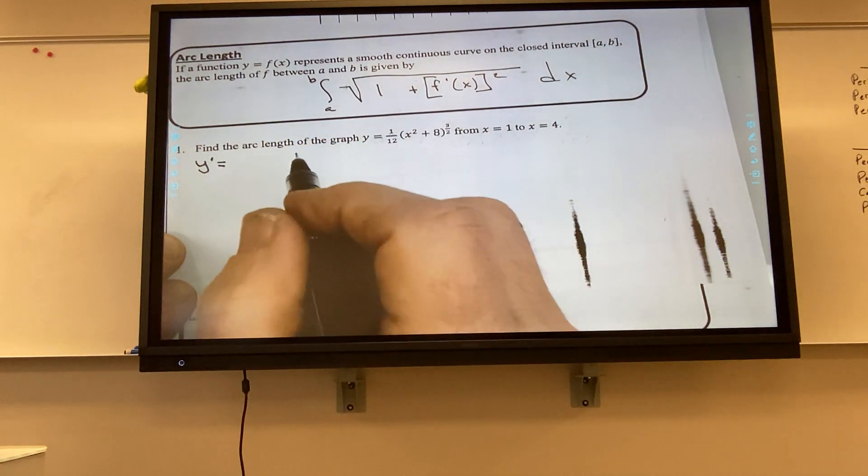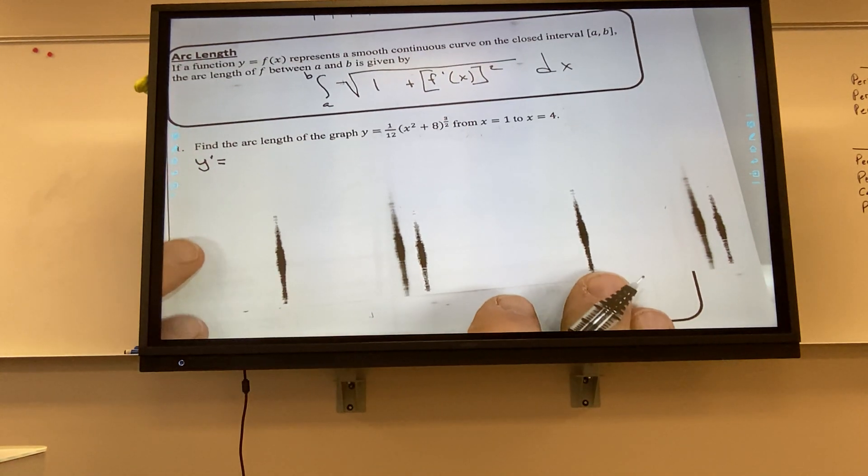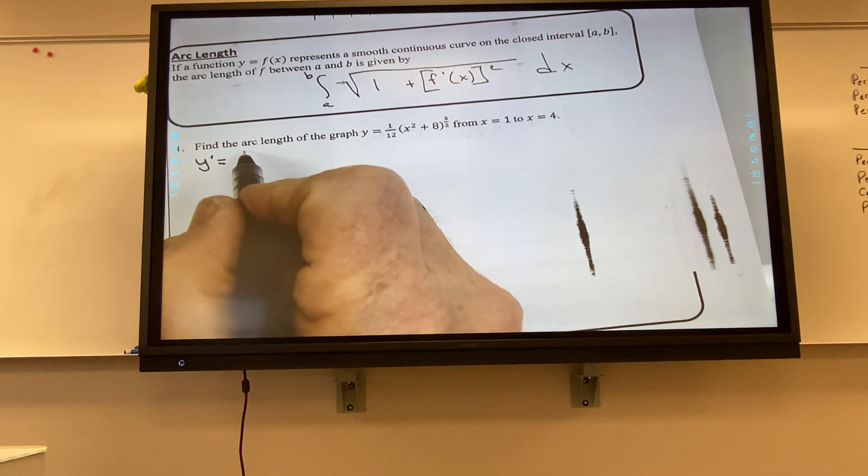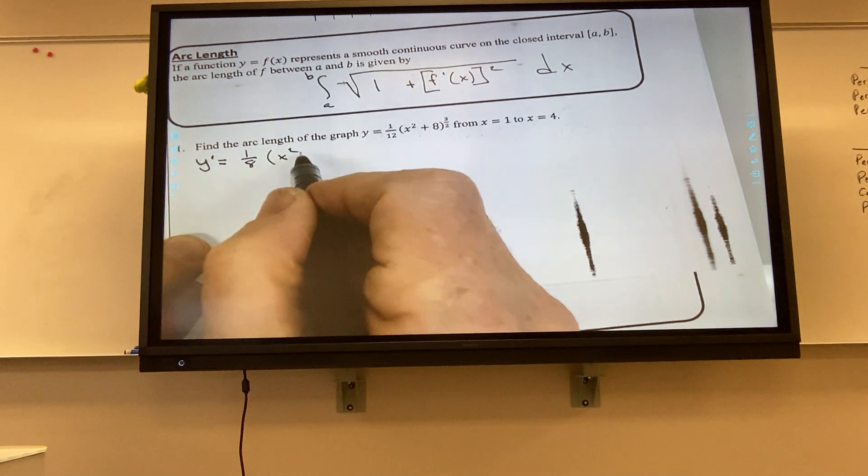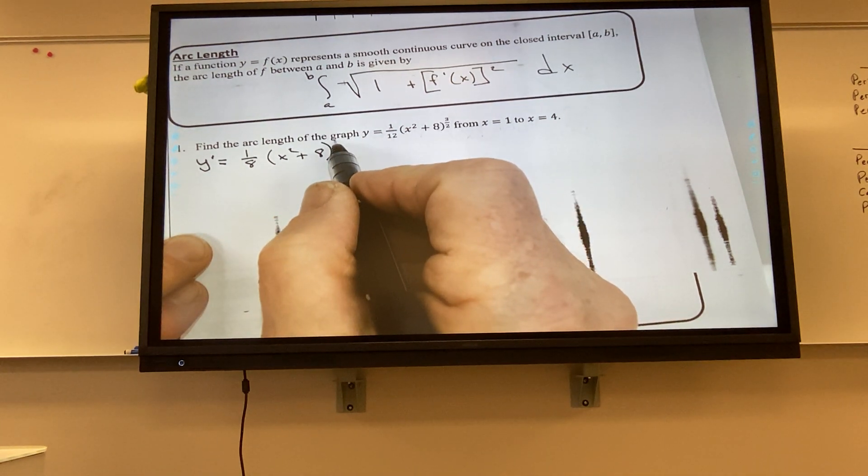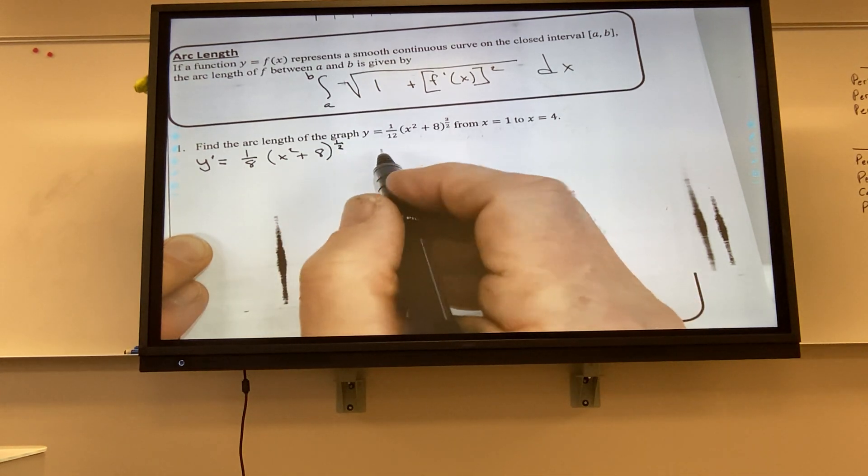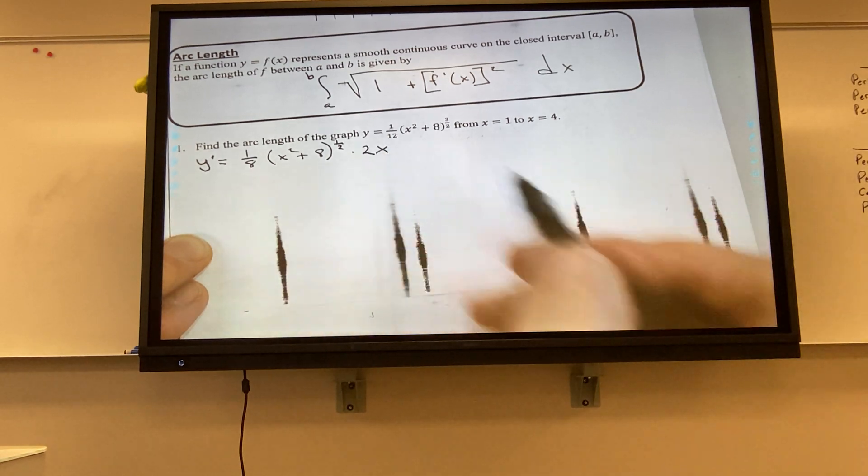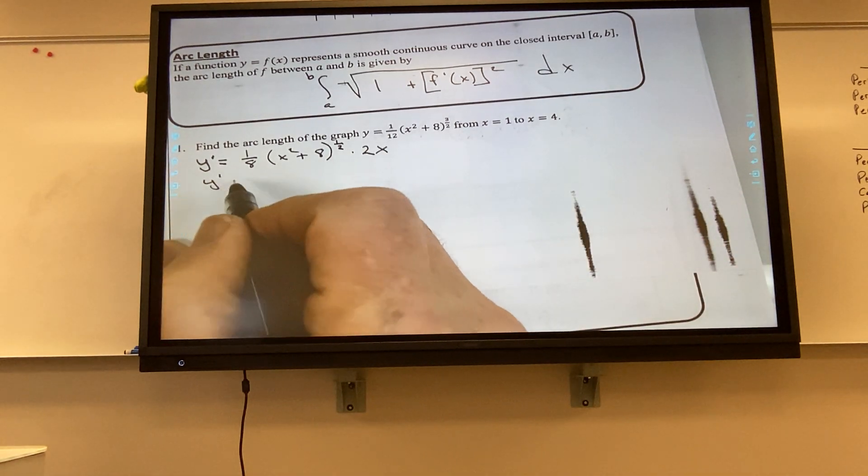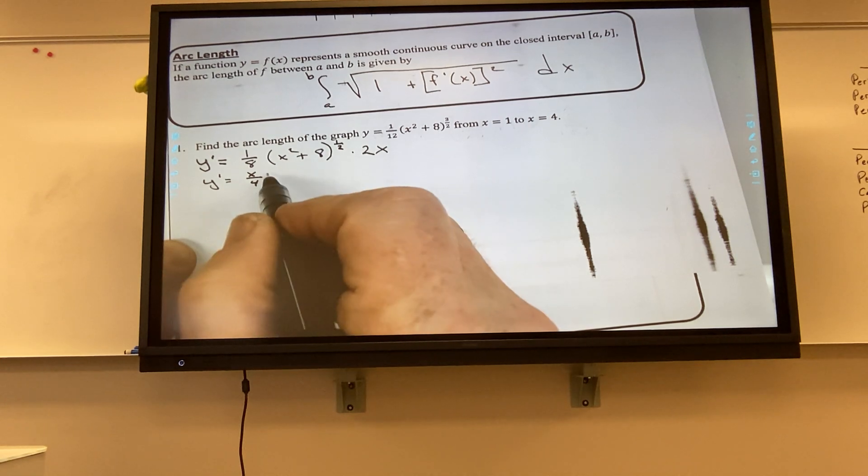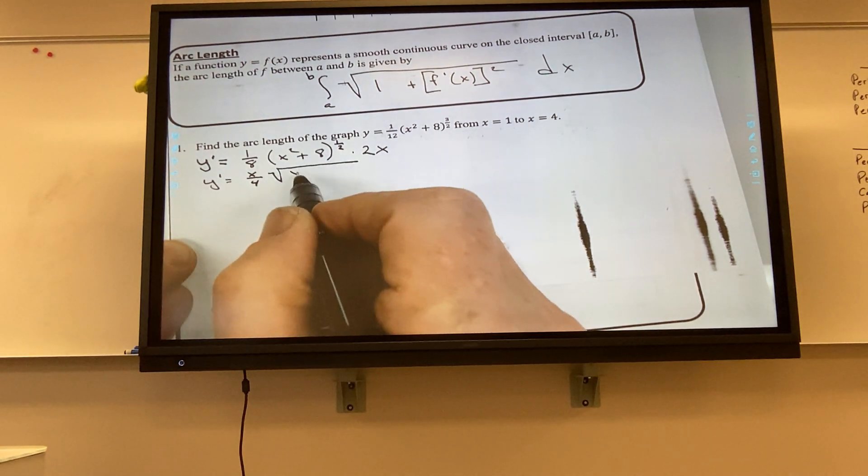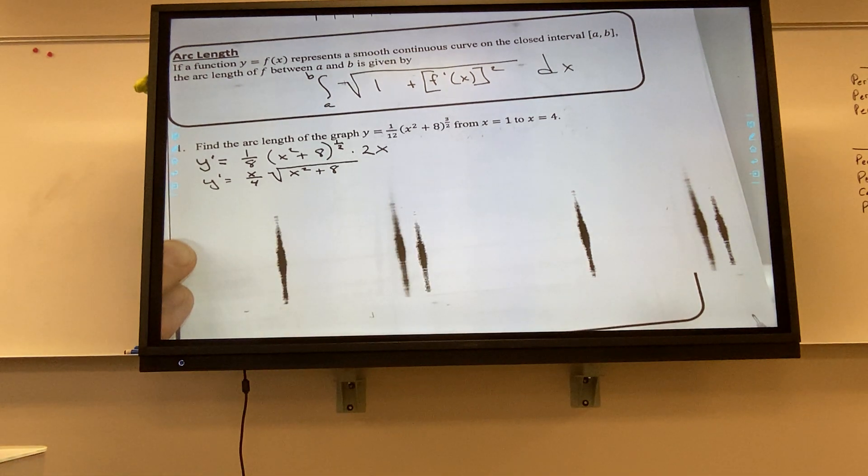And so what we're going to do is have to take its derivative. And Matt, will you tell me what the derivative is? It would be 1 over 8 times x squared plus 8 times 2x. And the exponent becomes what? 1 over 2. 1 over 2, and it's times 2x, you said? Yeah. Okay, so I could say that this is, when I simplify it, I can say that I have x over 4 times the square root of x squared plus 8. Would you agree with that? Yeah. Okay.